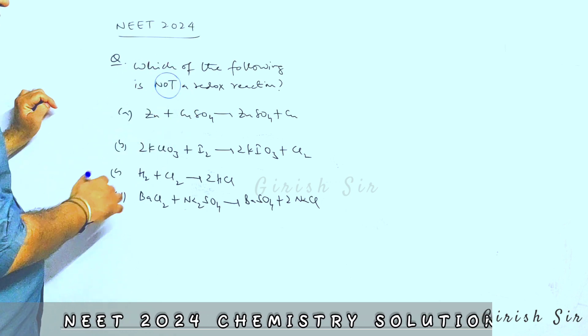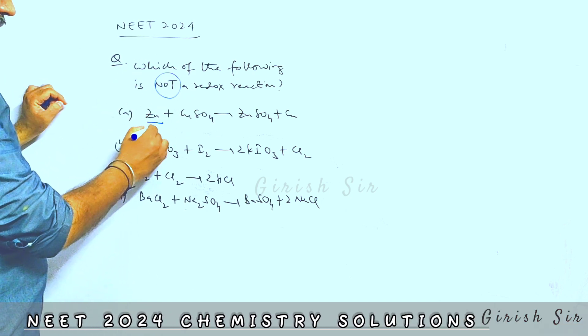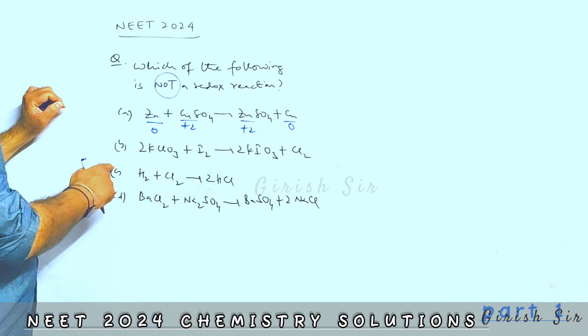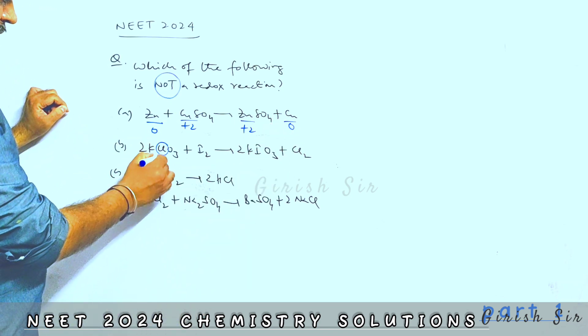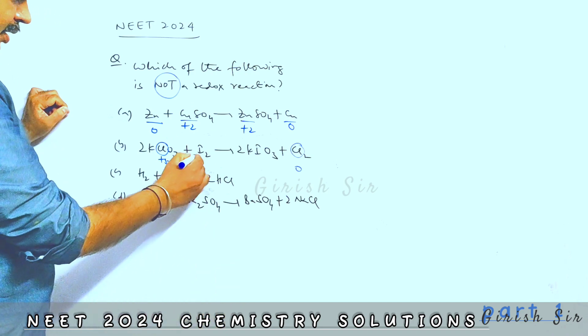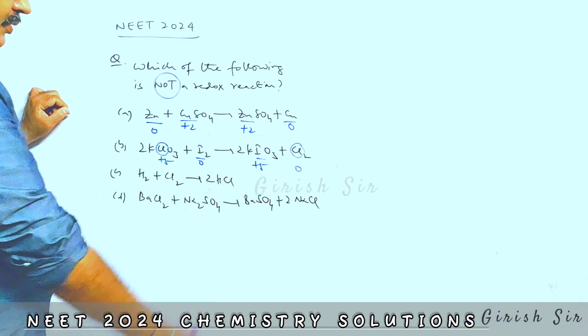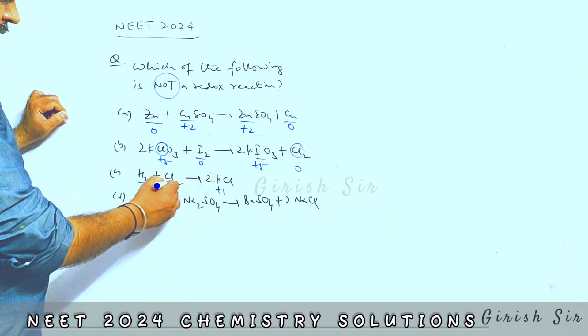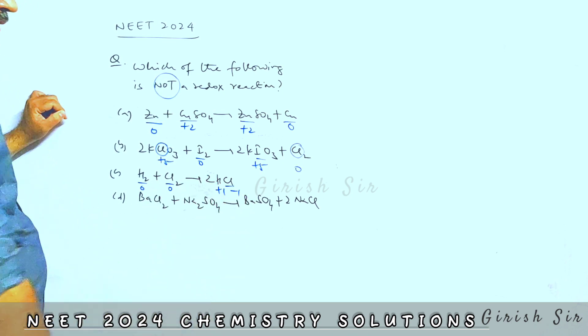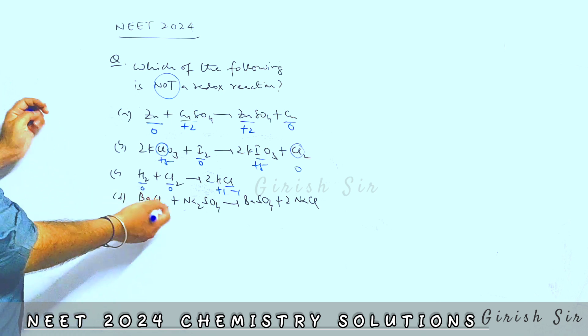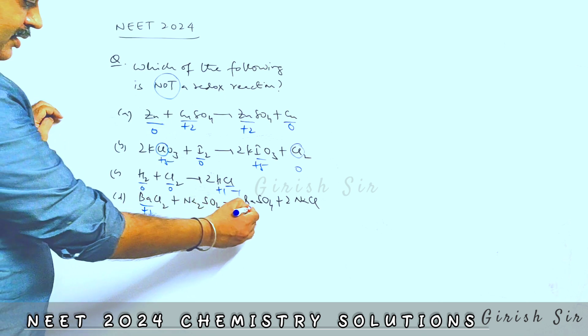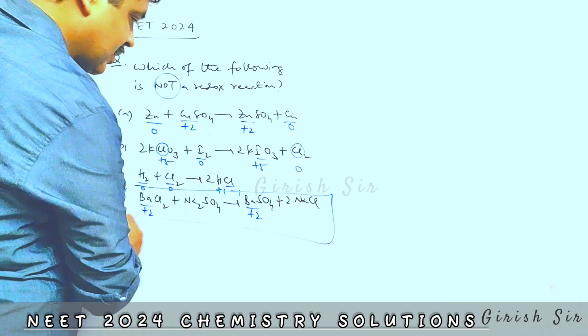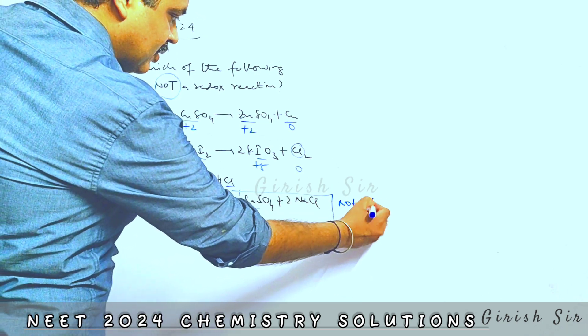Let's see the next question. Which of the following is not a redox reaction? In reaction 1, zinc gets oxidized and copper is getting reduced, so it is a redox reaction. In option B, chlorine is getting reduced and iodine gets oxidized, so this is also a redox reaction. In option C, hydrogen gets oxidized and chlorine gets reduced, so this is also a redox reaction. So answer should be D option. We can check as well. Here barium maintains its oxidation state of plus 2, so it's not getting oxidized or reduced. Option D is the answer. This is not a redox reaction.